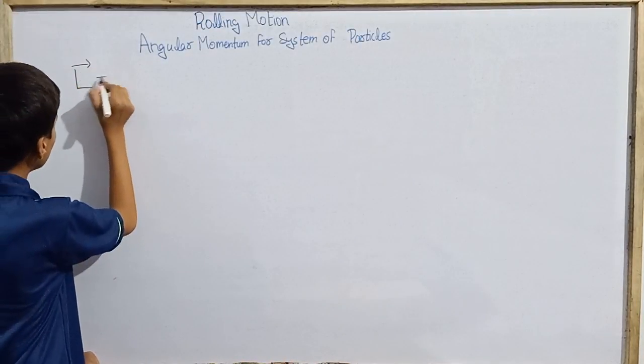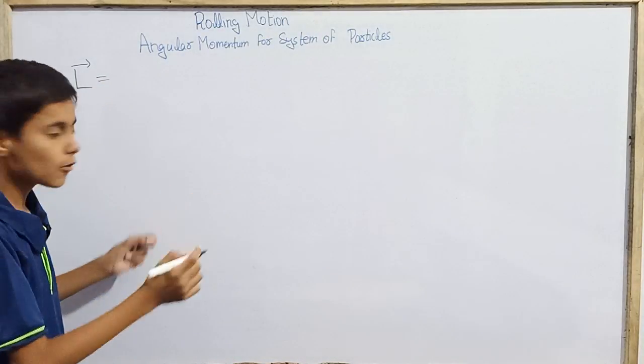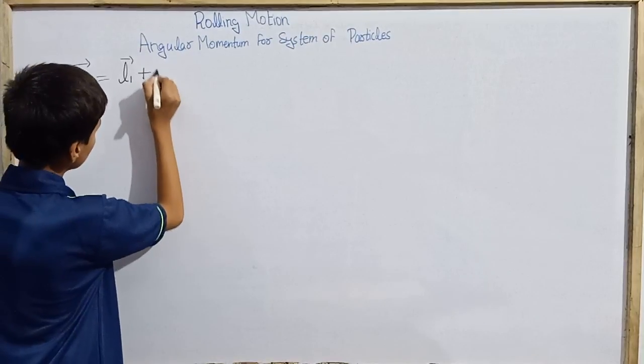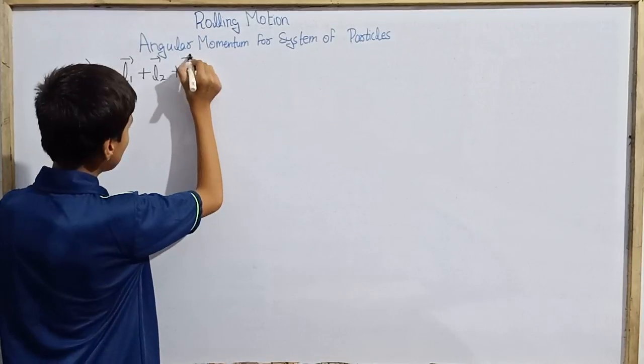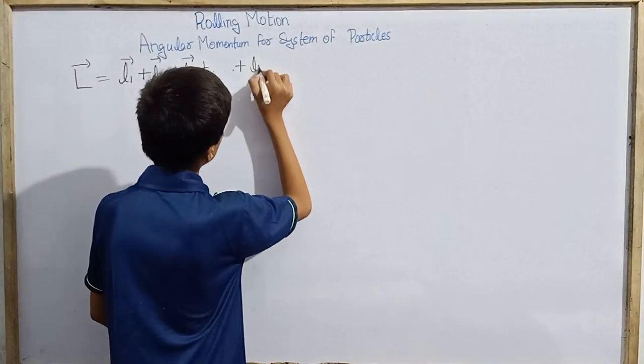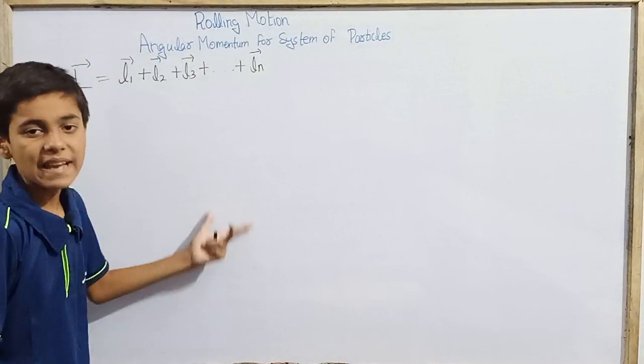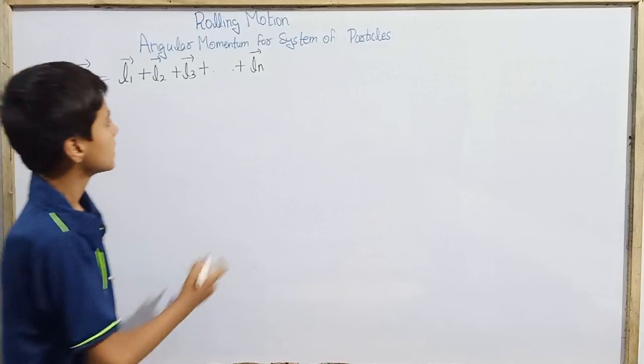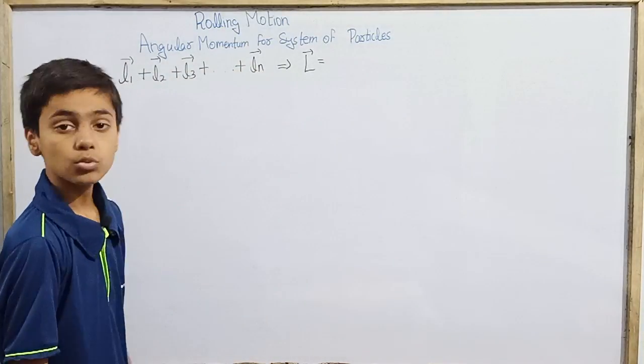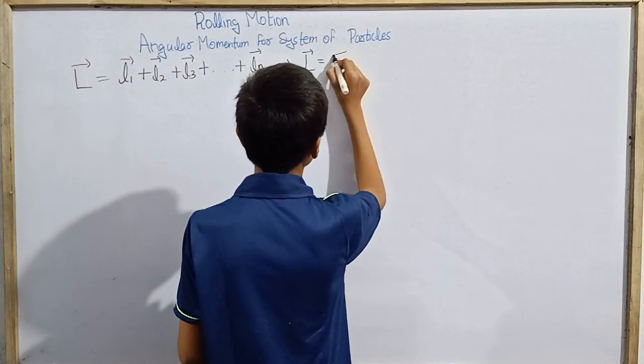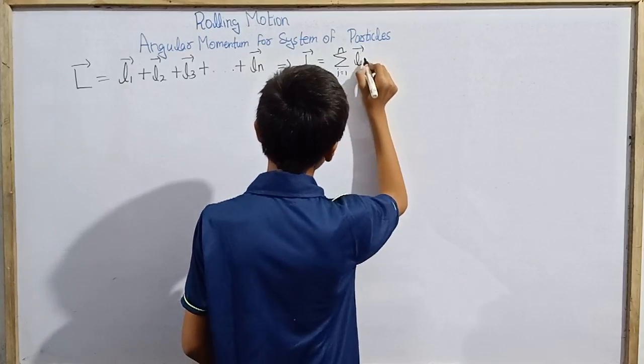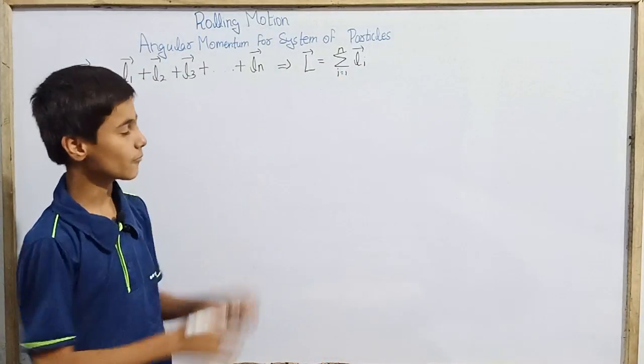It is somewhat the same way: vector L of the whole rigid body equals vector L1 plus vector L2 plus vector L3, and you continue to add until you reach the nth particle, vector L of N. You can write it in short form because the equation is very lengthy. Total rigid body, total system of particles, total angular momentum vector L, you can write as sigma where i equals 1 to n, vector Li, where vector Li is the angular momentum for the ith particle.